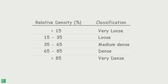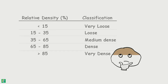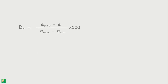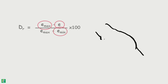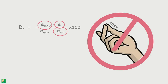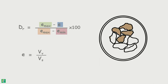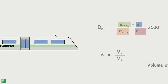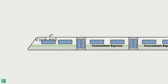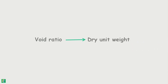So, how do we determine the relative density values? In this formula, we see void ratios at different denseness of soil. But it is not easy to determine the void ratio of these samples because it is difficult to measure the volume of solids. However, it is convenient to express void ratio in terms of dry unit weight.